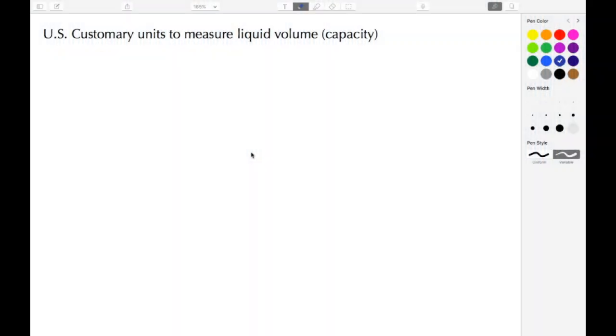Welcome back to ajspeller.com. In today's tutorial, we're going to look at a way to remember what the U.S. customary units are to measure liquid volume, also known as capacity. With this method, something I call Big G or Super G.